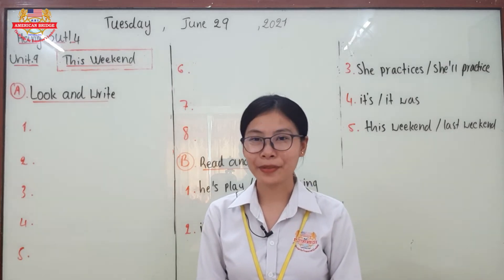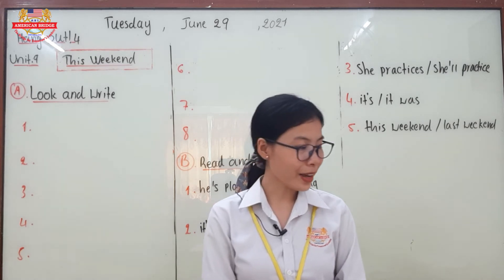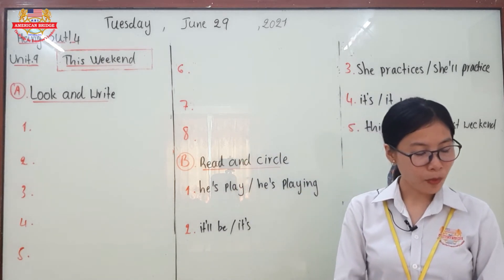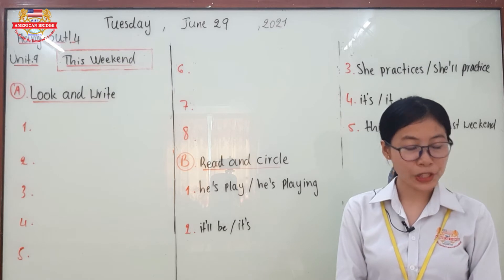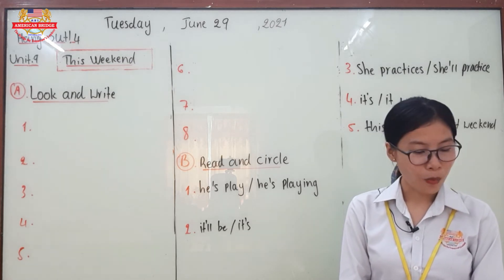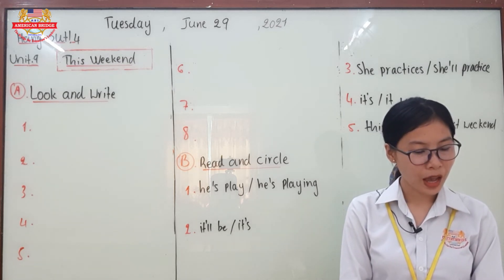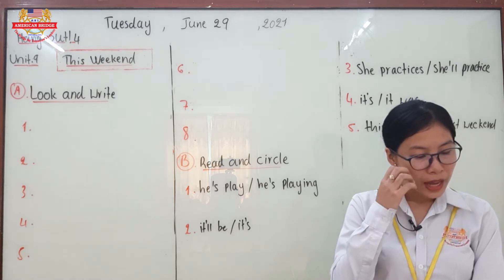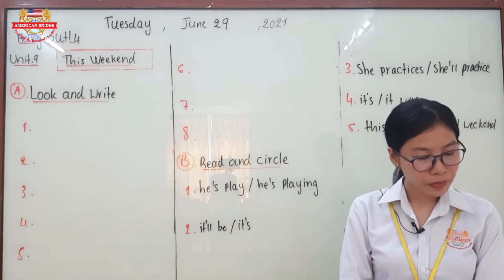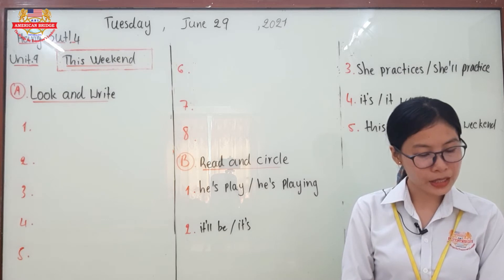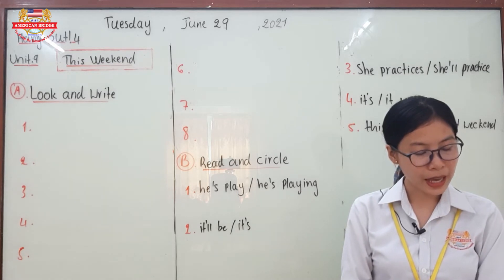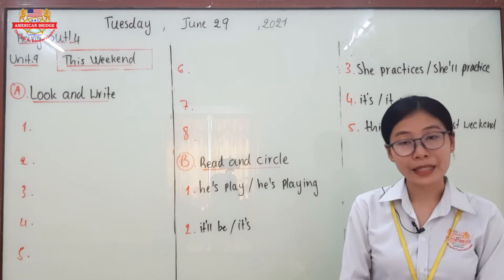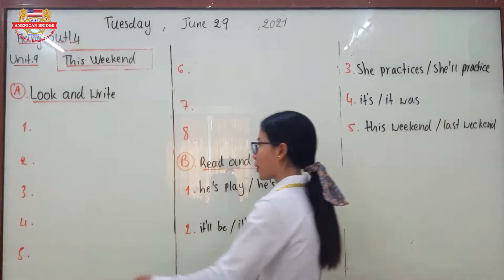Brilliant everyone! Now it's time to check the answers with the teacher. Number one — what picture do you see? Is it rainy, stormy, sunny, chilly? Yes, this is a picture of rainy.